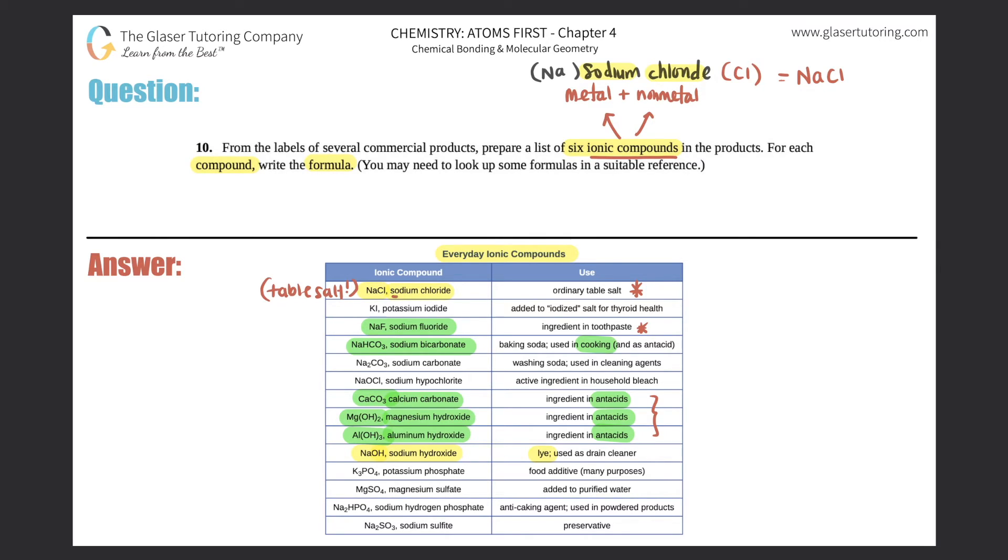Just pick six, write the compounds with the formulas. To reiterate, the actual word is the compound. If I just put over here 'compound' would be sodium chloride, and then the formula that they want is the actual NaCl.